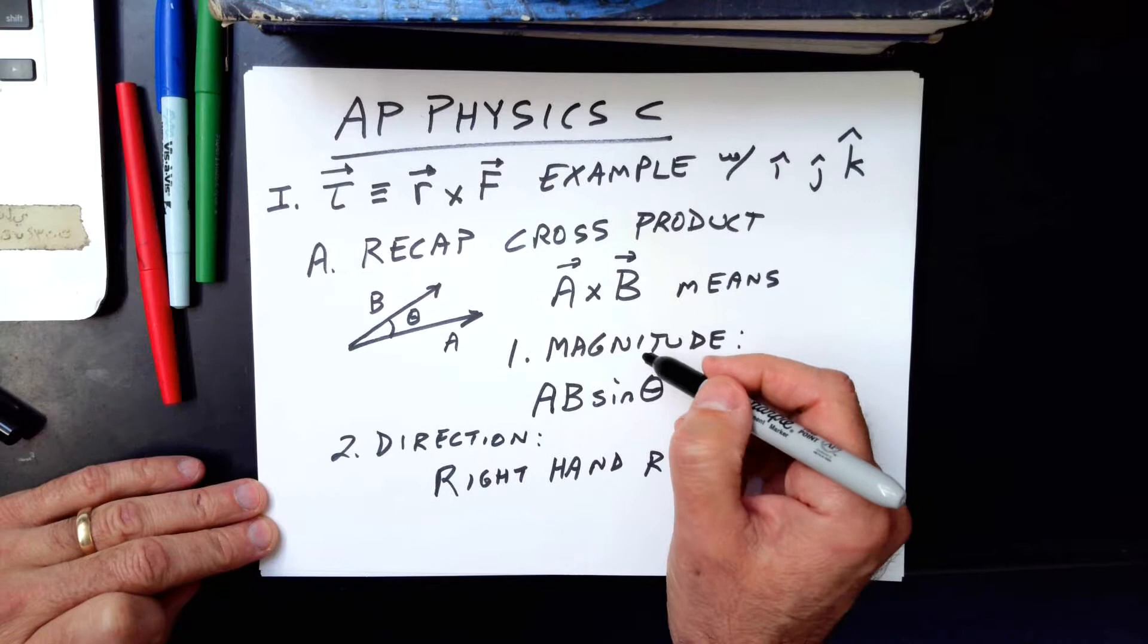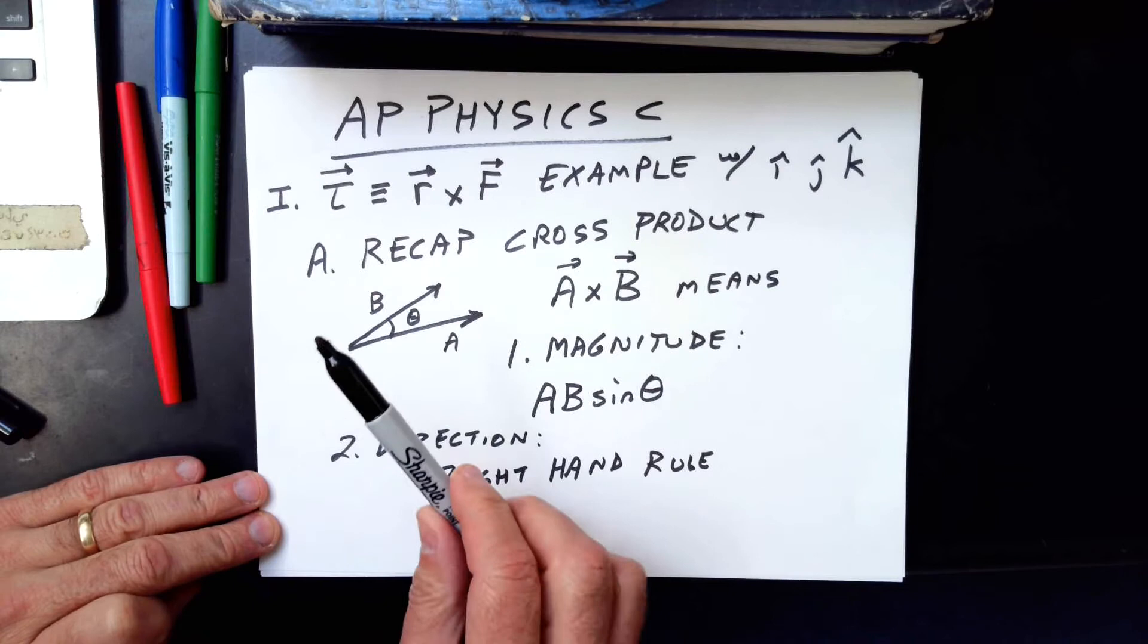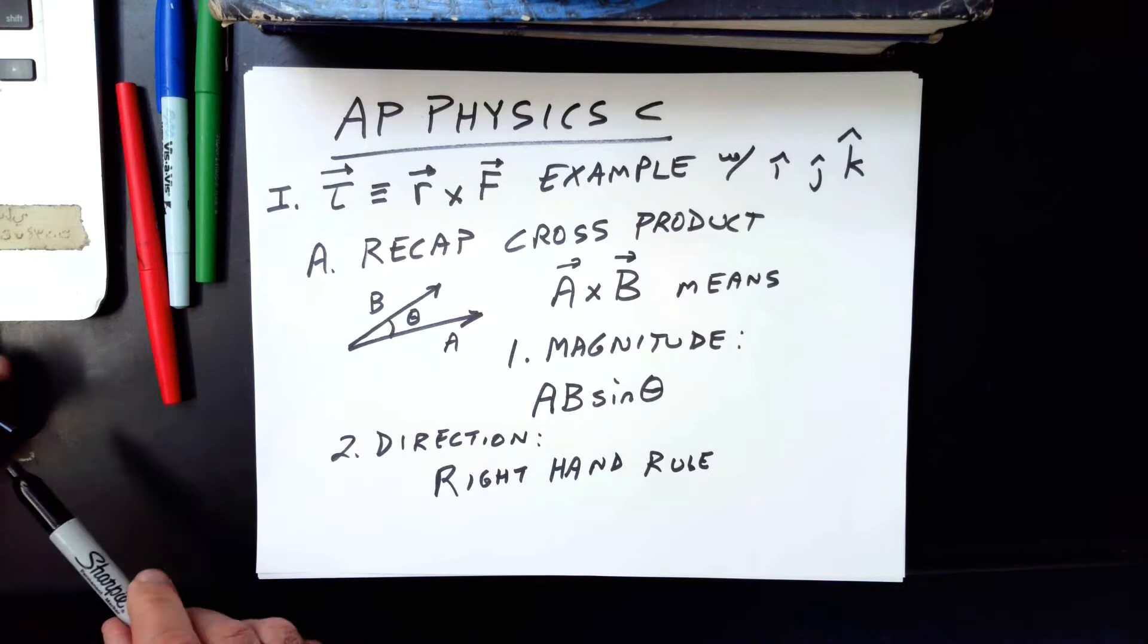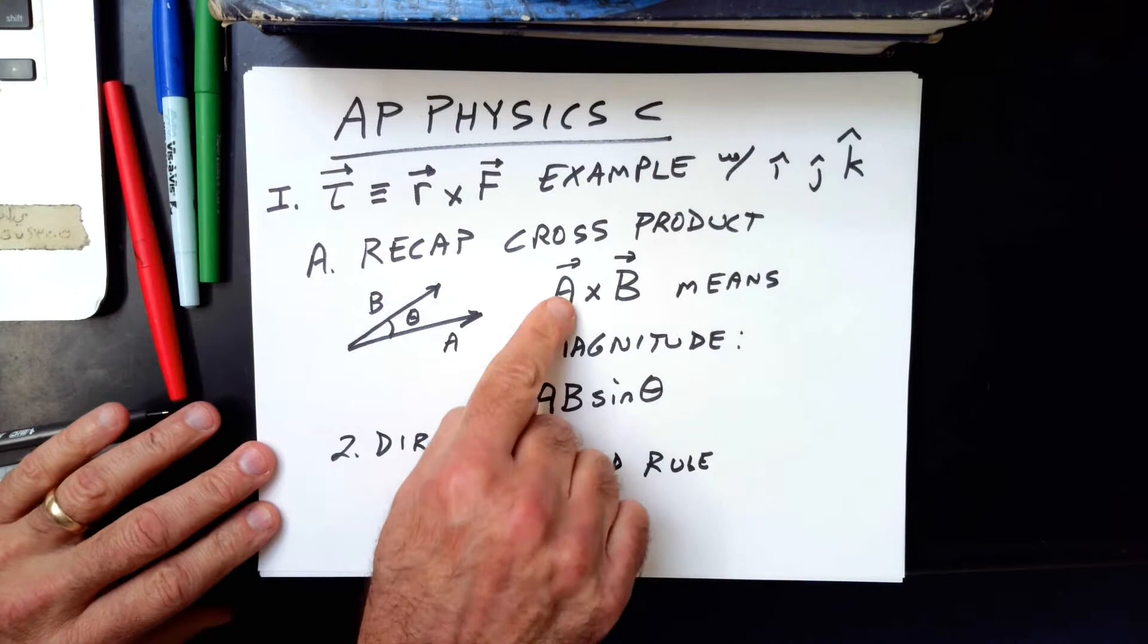The cross-product has a strength and a direction. The strength or magnitude of the cross-product is given by A, B sine theta, and it's a measure of how perpendicular they are. This is like taking the perpendicular part of B, the part that's perpendicular to A, and multiplying it times the full length of A, or vice versa. The direction of the cross-product is found using the right-hand rule.